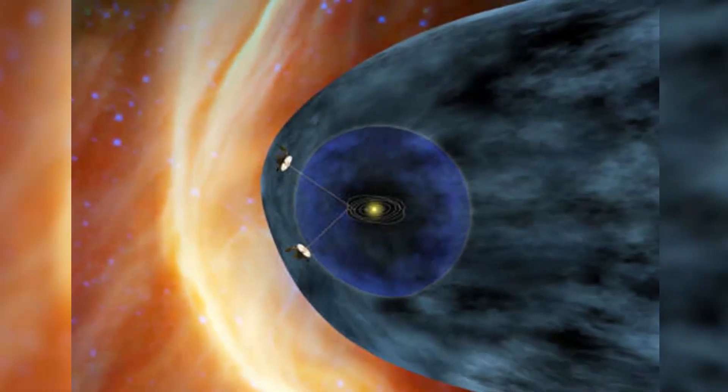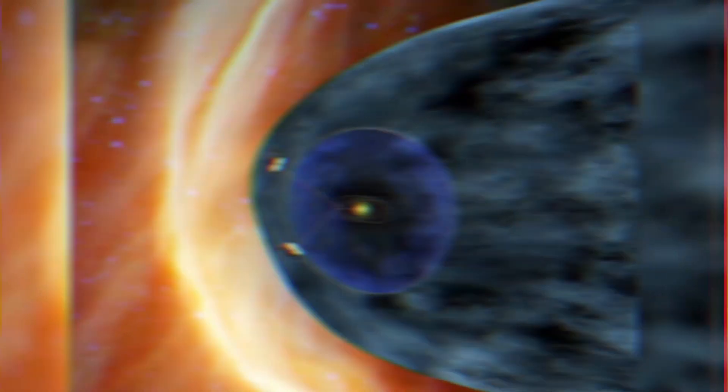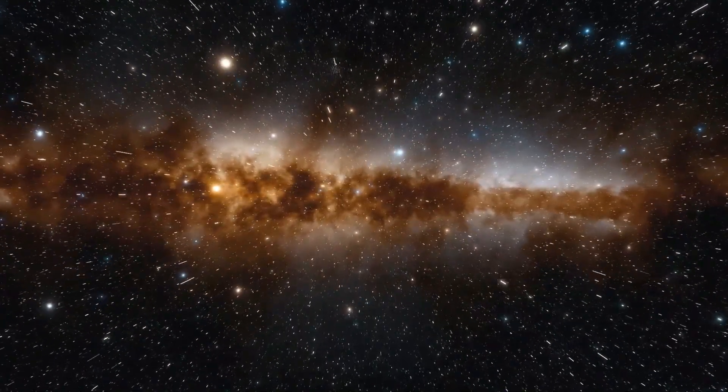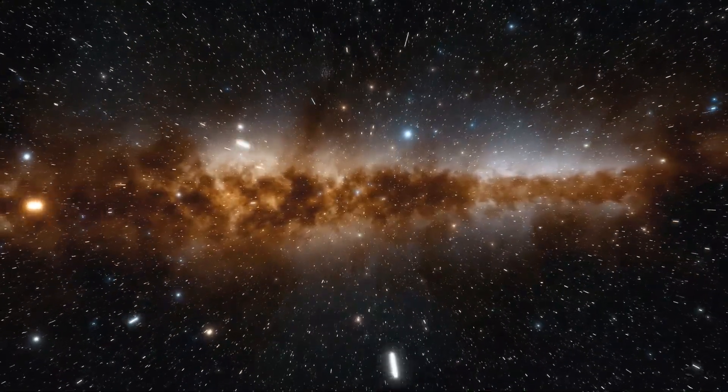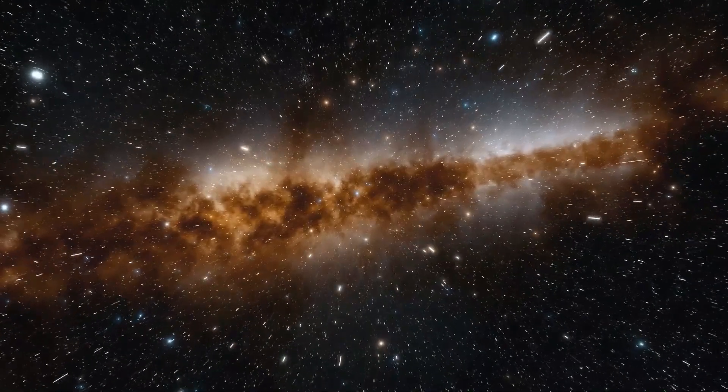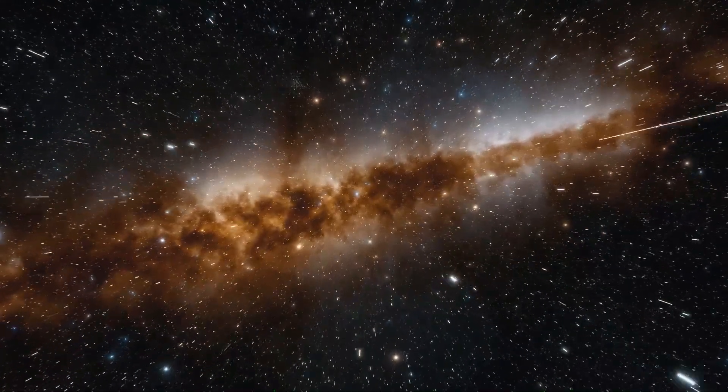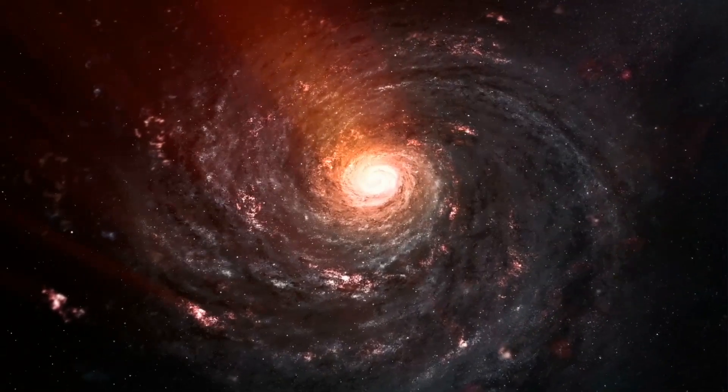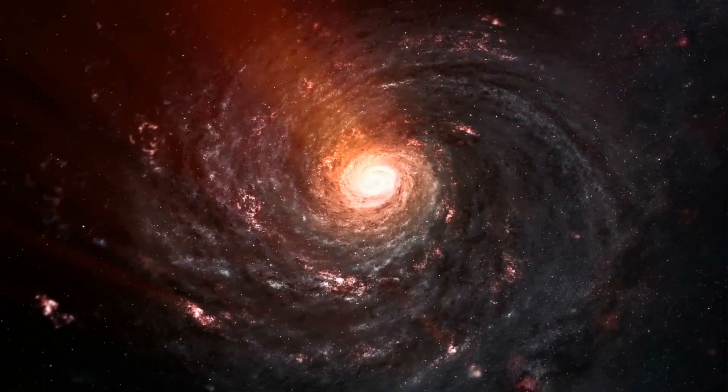The spacecraft was able to analyze the makeup of solar winds, the composition and behavior of plasma particles, the interaction of cosmic rays, the structure and direction of magnetic fields, and other traits that define the edges of the solar system. This allowed the craft to make some shocking discoveries about the edge of our solar system.